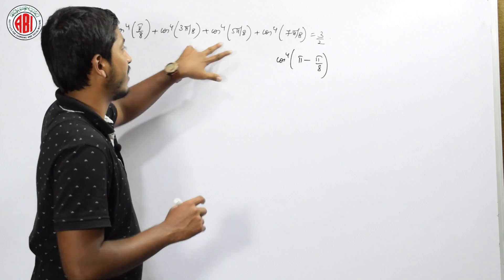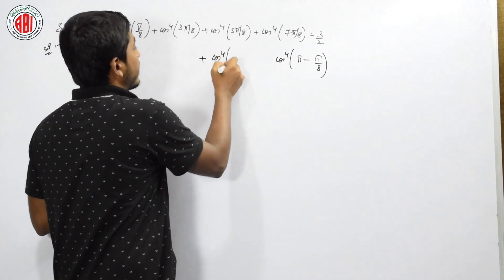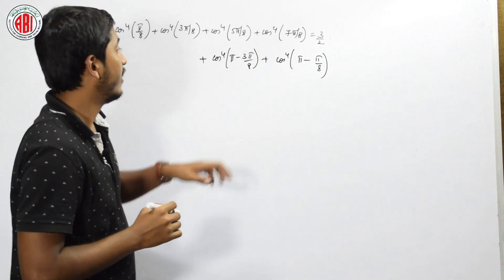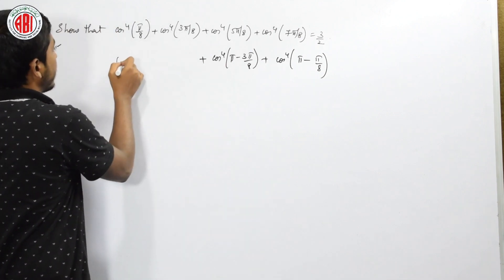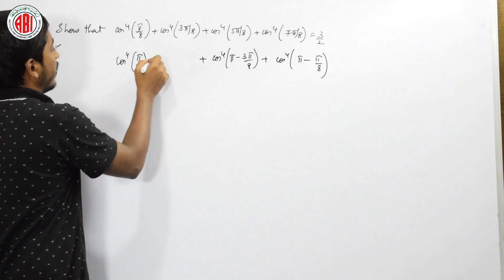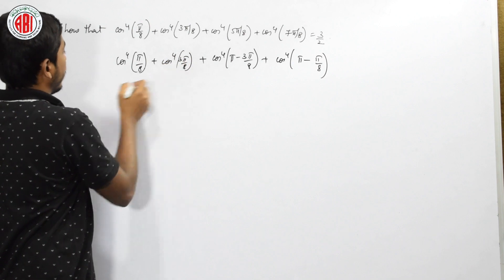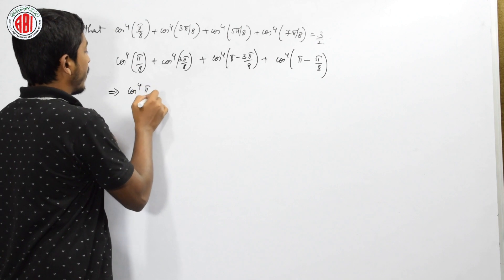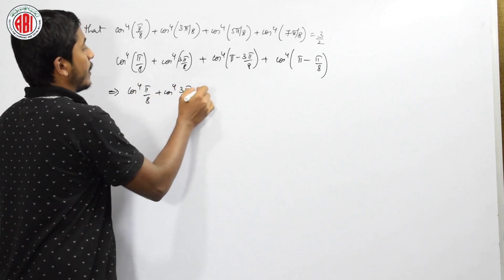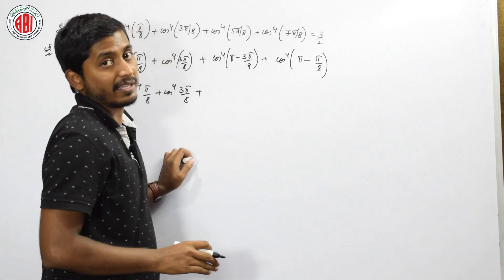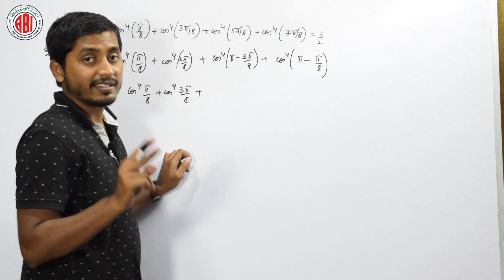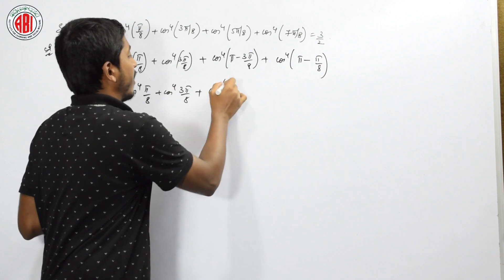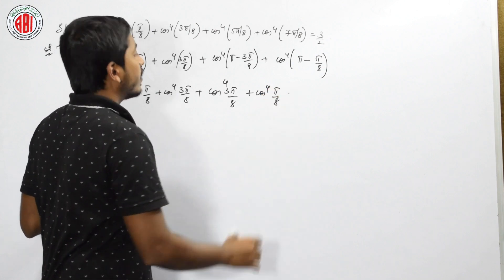Similarly, can I write 5π/8 as π minus 3π/8? Yes, we can write it. So the two terms become the same. The expression reduces to cos⁴(π/8) + cos⁴(3π/8) + cos⁴(3π/8) + cos⁴(π/8), which gives us 2·cos⁴(π/8) + 2·cos⁴(3π/8). Taking 2 as common, it becomes 2·[cos⁴(π/8) + cos⁴(3π/8)].